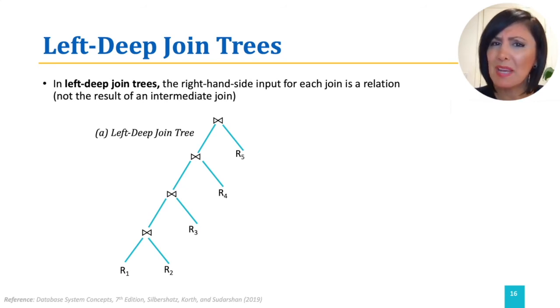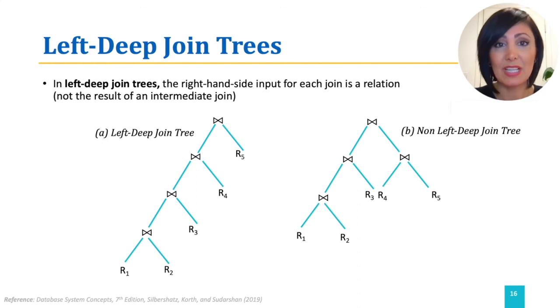So what makes left-deep join trees the preferable option? Let's consider the alternative, a non-left-deep join tree, including intermediate relations to join.